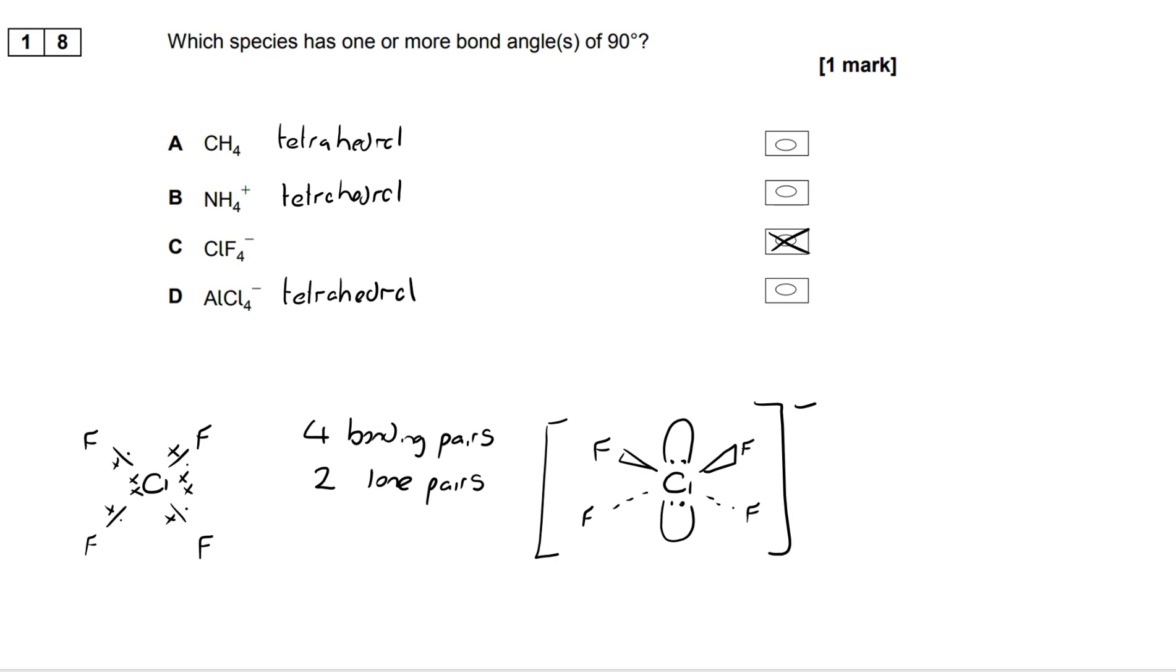The two lone pairs will go on opposite sides of each other which means that they cancel each other out leaving the bond angle at 90 degrees. So the correct answer is C.